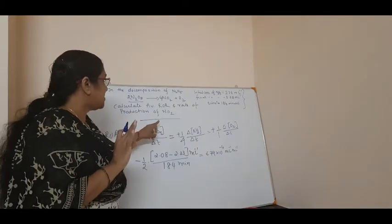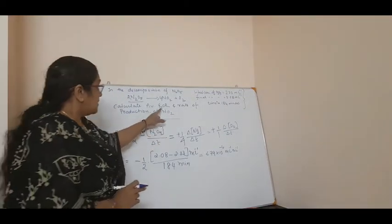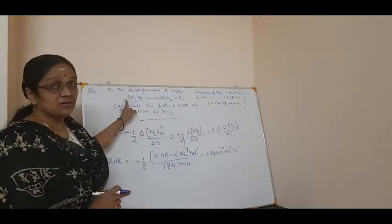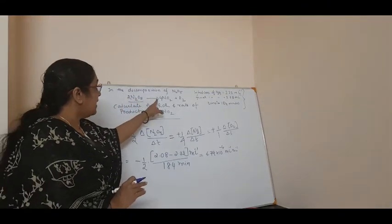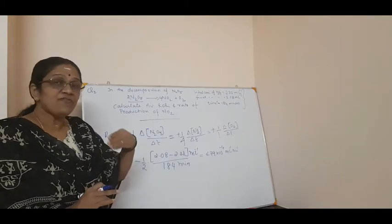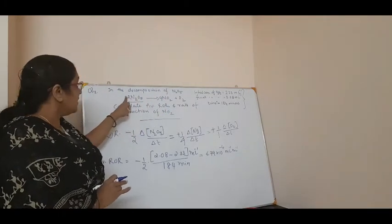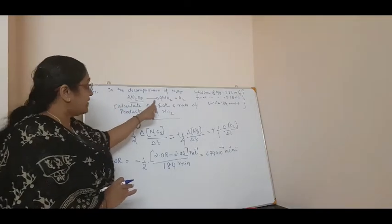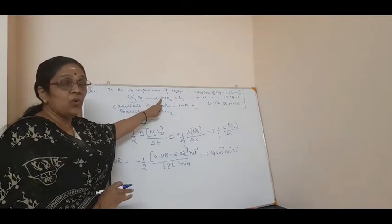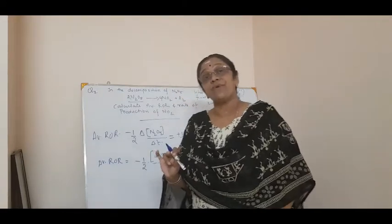Now the second question: how will you calculate the rate of production of NO₂? The rate of production of NO₂ means the rate of appearance of NO₂. Last class we talked about the rate of disappearance. From this equation, you can say the rate of disappearance of N₂O₅ and the rate of appearance of NO₂ and O₂. So, the rate of production means they are asking you what is the rate of appearance of NO₂.